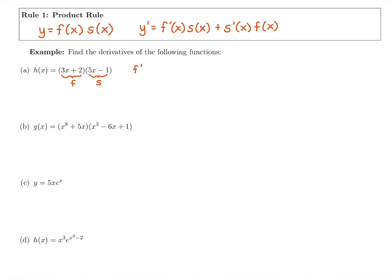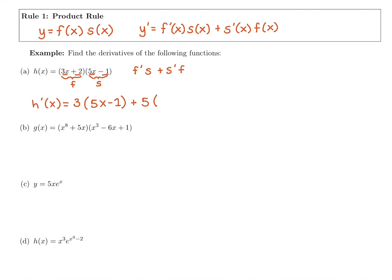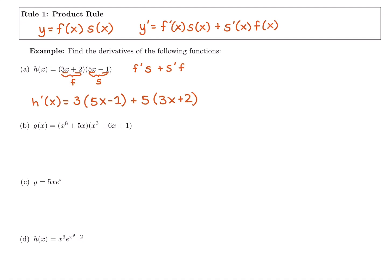Applying the product rule: h prime of x equals derivative of the first times the original second, plus derivative of the second times the original first. The derivative of 3x is 3 (by the mini rule), and derivative of 2 is 0 (constant), so derivative of the first is 3. Multiply that by the original second, (5x − 1). Product always has a plus. Derivative of 5x is 5, derivative of negative 1 is 0, so derivative of the second is 5. Multiply by the original first, (3x + 2). Order doesn't technically matter — you just need derivative of one term times the original other, added together. I'll use consistent order to help remember it.